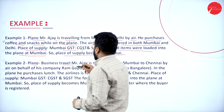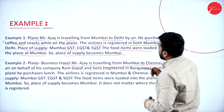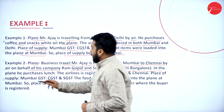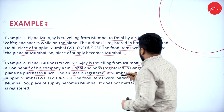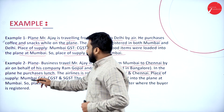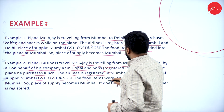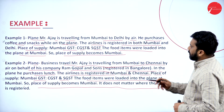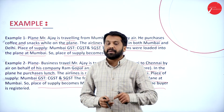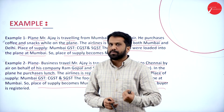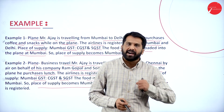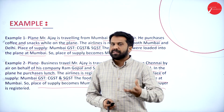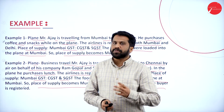Second example — business travel: Mr. Ajay is traveling from Mumbai to Chennai by air on behalf of his company, Ram Gopal and Sons, registered in Bangalore. On the plane he purchases lunch. The airline is registered in Mumbai and Chennai. Place of supply: Mumbai — CGST applies. The food item is loaded onto the plane at Mumbai, so place of supply becomes Mumbai. It does not matter whether the buyer is registered in Chennai — what matters is where the food was bought from, which is Mumbai. From where you take is the place of supply.